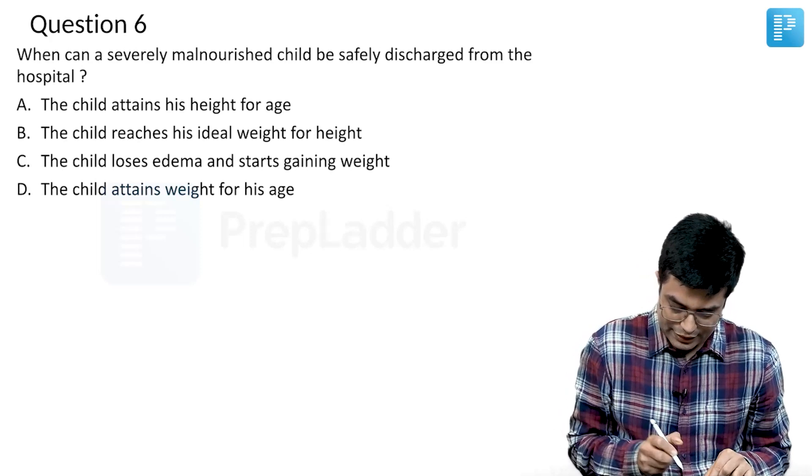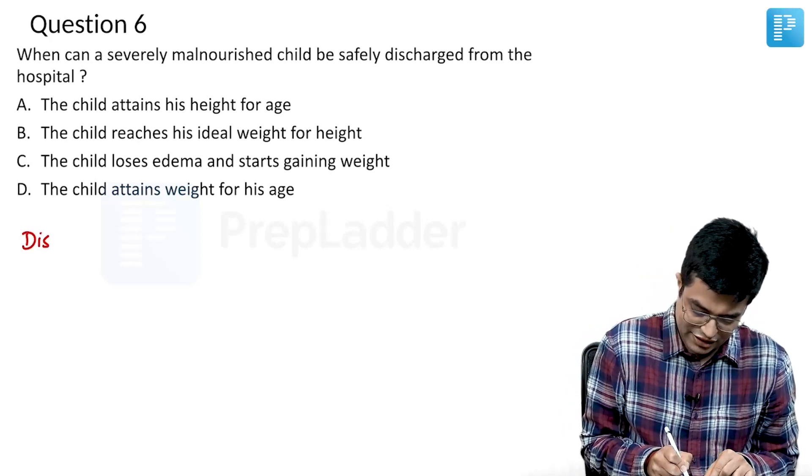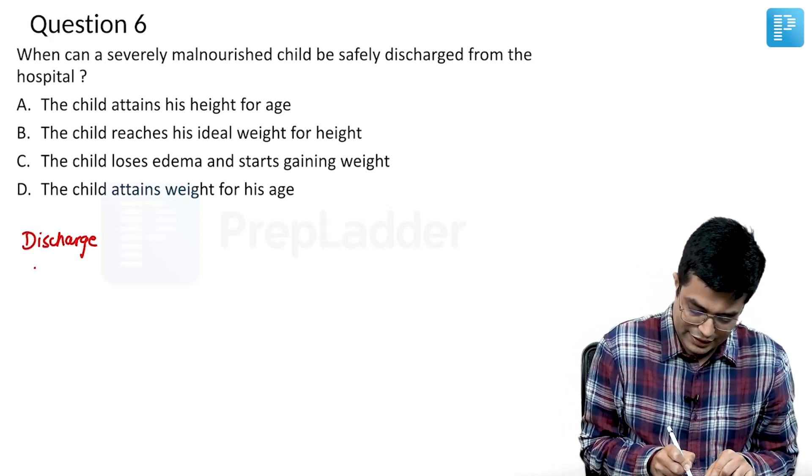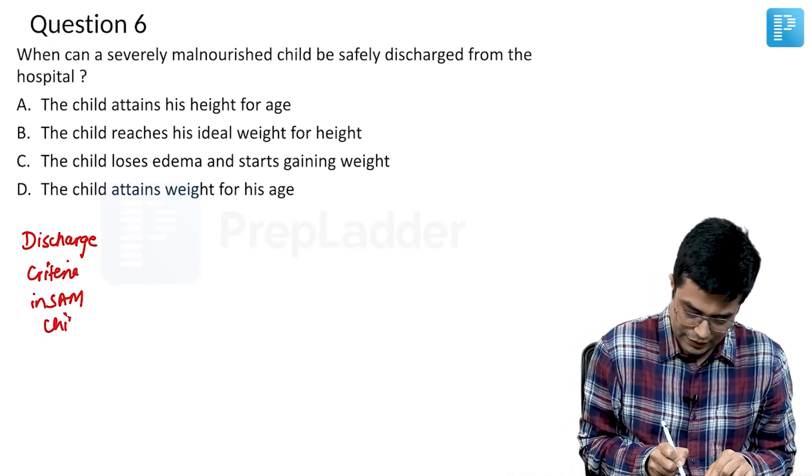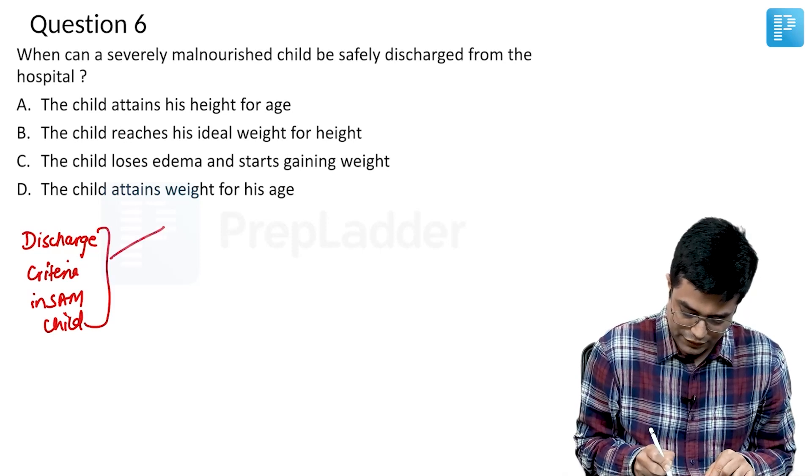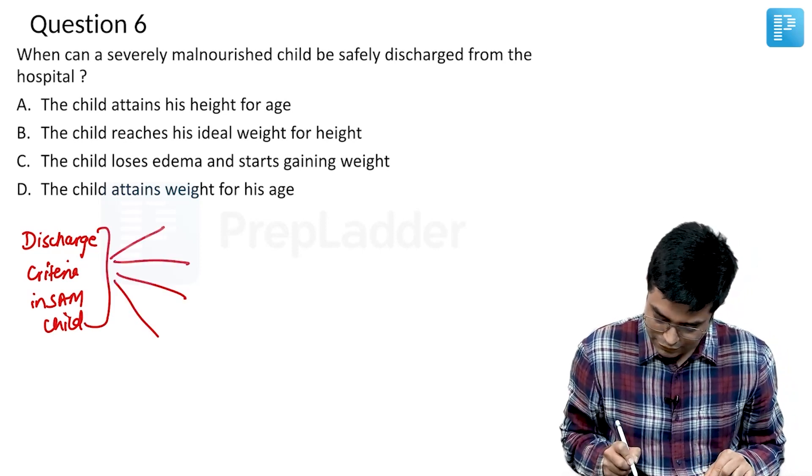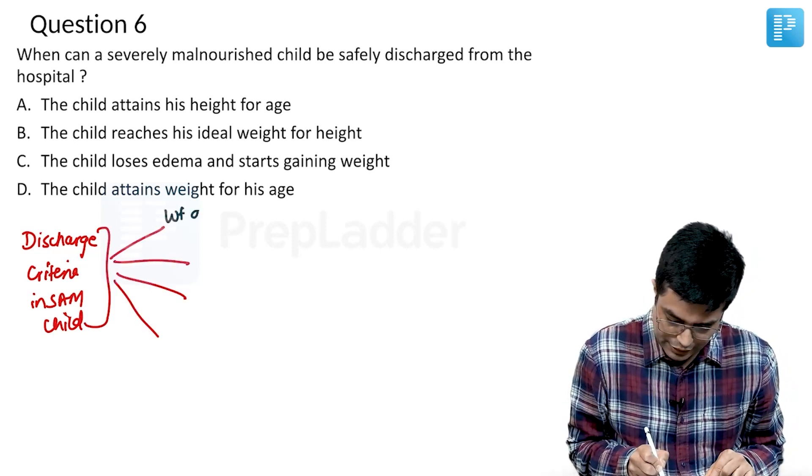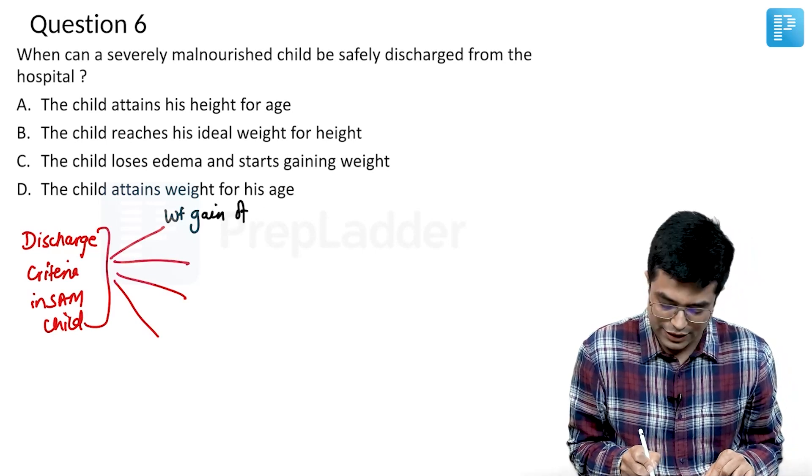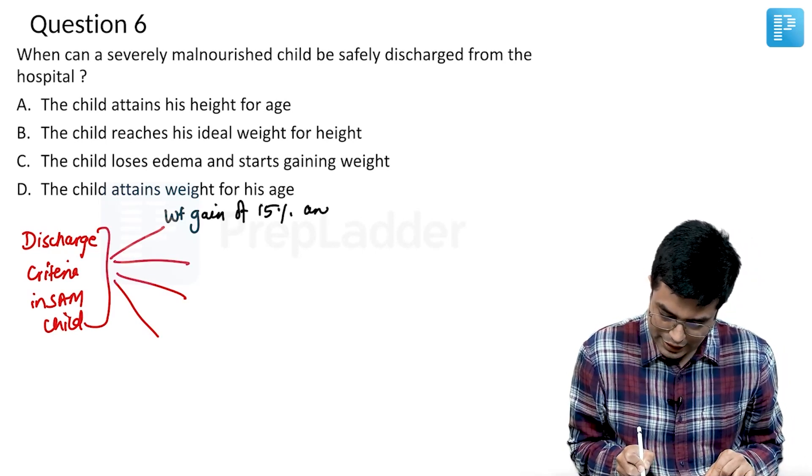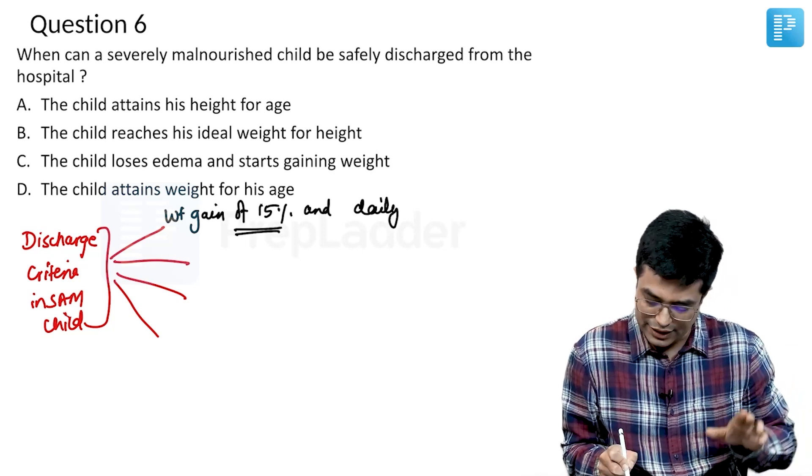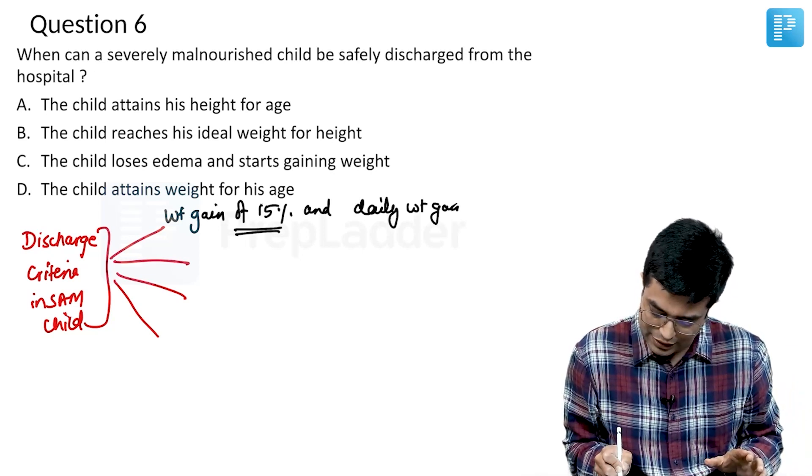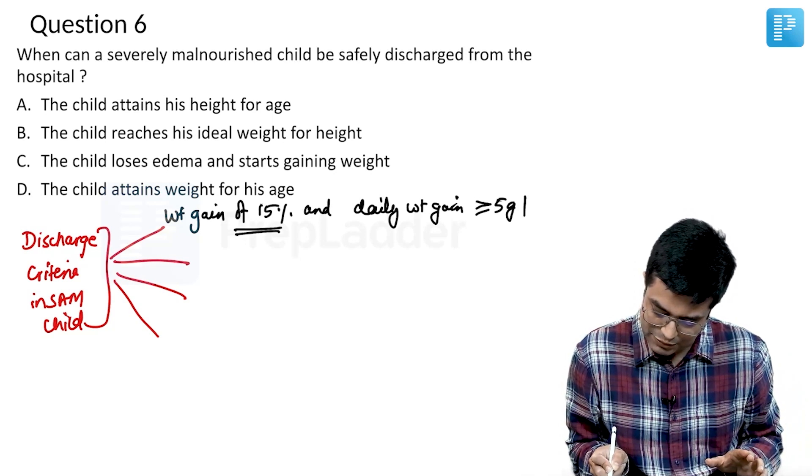What are the criteria that we are supposed to remember? What are the discharge criteria in a SAM child? There are four sets of criteria which have been defined. First of all, there should be weight gain from the baseline of at least 15% and daily weight gain should be at least equal to or more than 5 grams per kg per day.